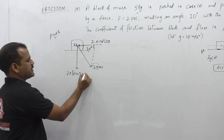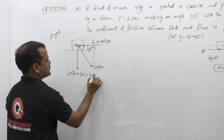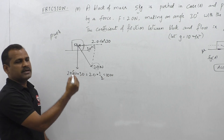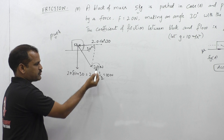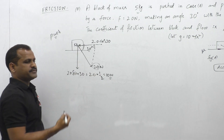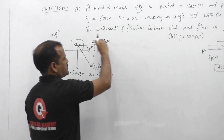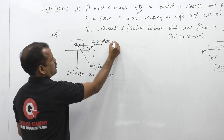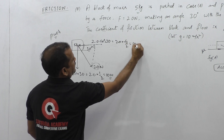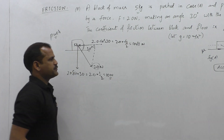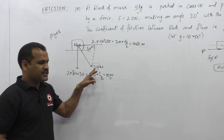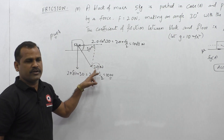Since sin30 = 1/2, the vertical component is 20 × 1/2 = 10N downward. The horizontal component is 20 cos30 = 20 × (√3/2) = 10√3 N. So we have a 10N downward component and a 10√3 N horizontal component from the applied pushing force.